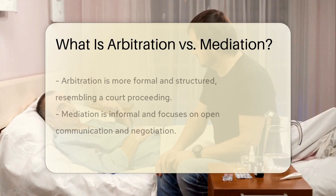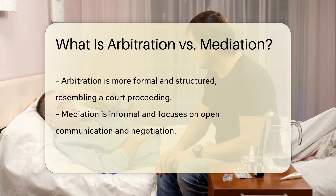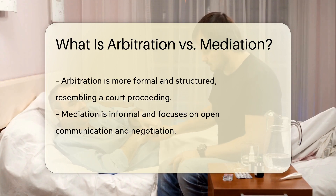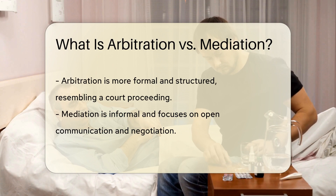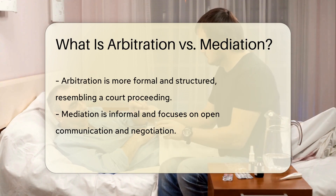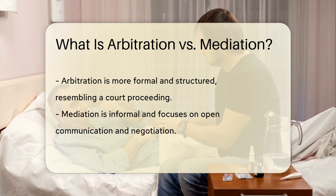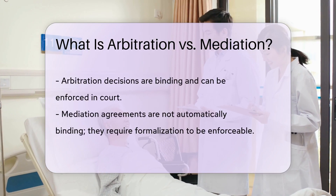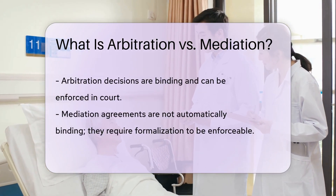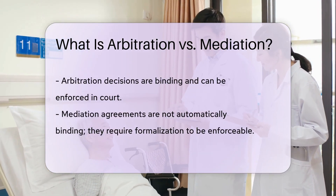Mediation, on the other hand, involves a neutral third party — a mediator — who helps parties reach a mutually acceptable agreement. Arbitration tends to be more formal and structured, with the arbitrator acting similarly to a judge. Mediation is more informal, focusing on facilitating communication between parties to find a resolution.